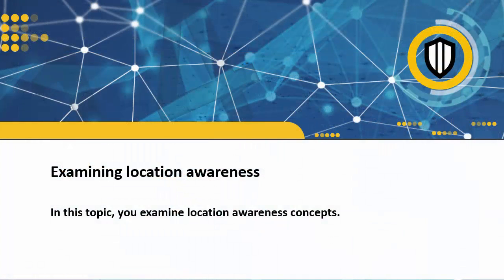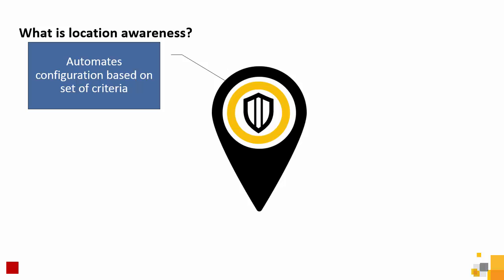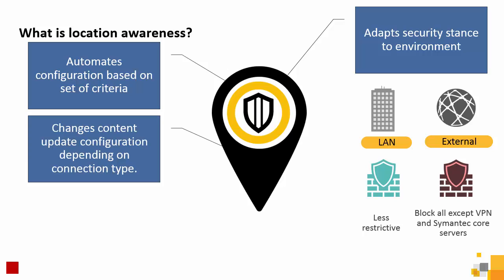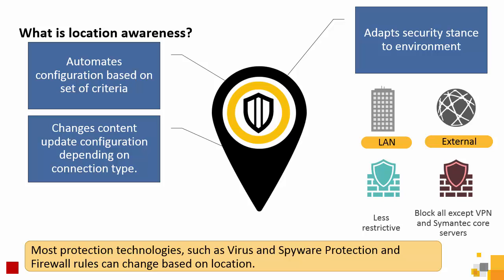Location awareness allows you to manage clients that connect to the network from different places, such as an office and VPN. For each location, assign a unique set of policies based on your organization's security strategy. For example, a remote employee who connects into the network using VPN may use more restricted policies versus the employee who works in the office. To enable the client to be location aware, add a set of conditions that automatically selects the correct location and security policies for the client. Then monitor for location changes directly on the client or from the SEPM.